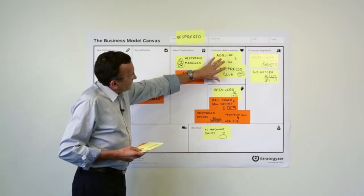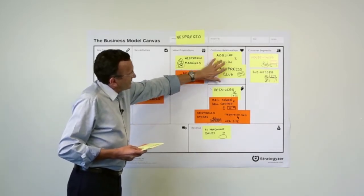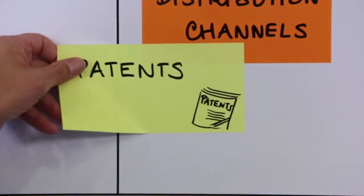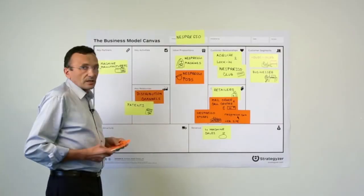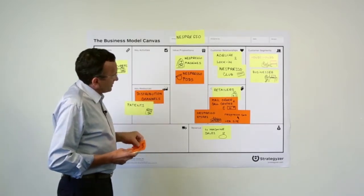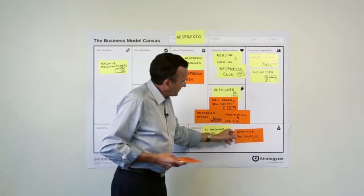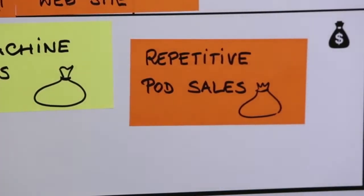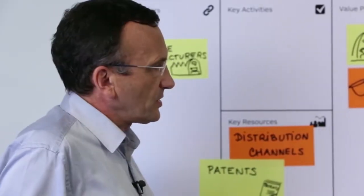And you can have this kind of strategy because also you have on your resource side the patents. And based on this, you have the repetitive sales coming from those capsules, which is the main revenue for Nespresso.